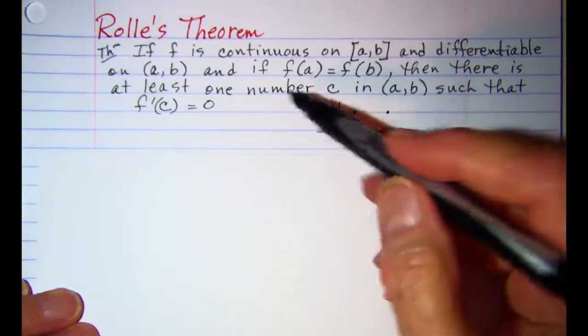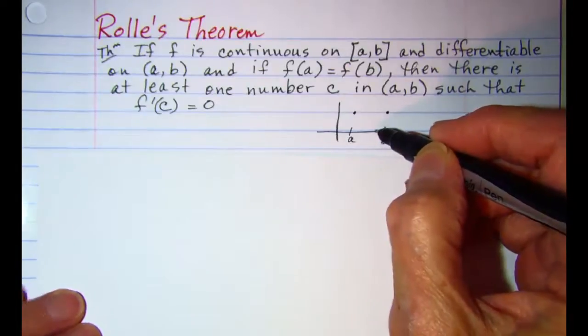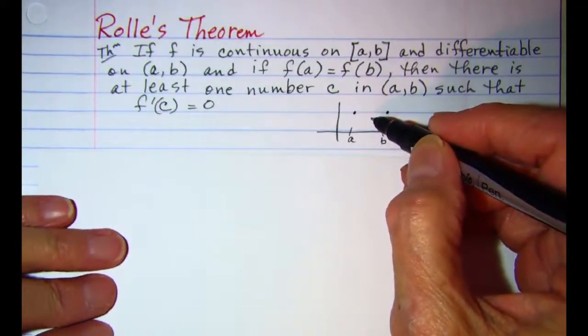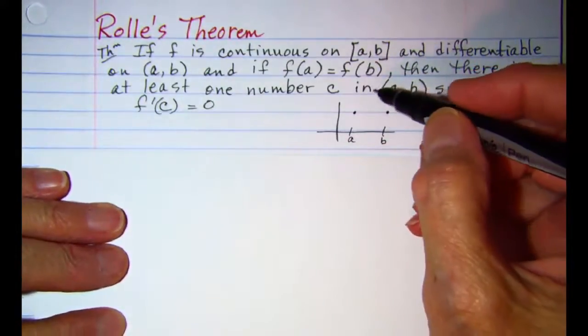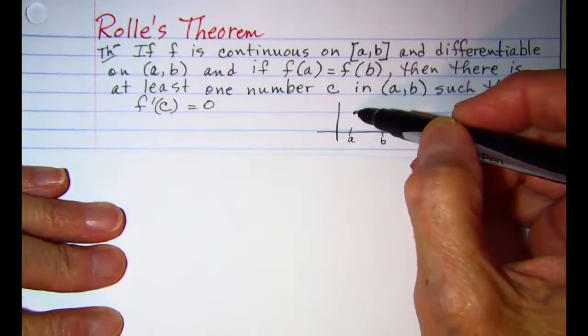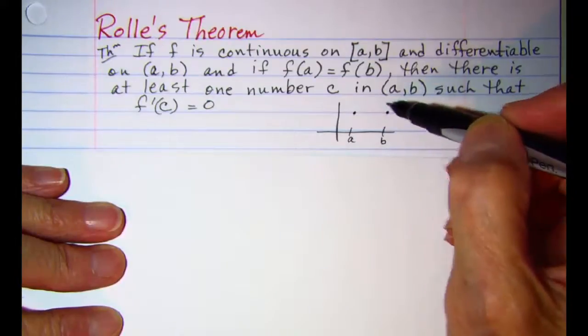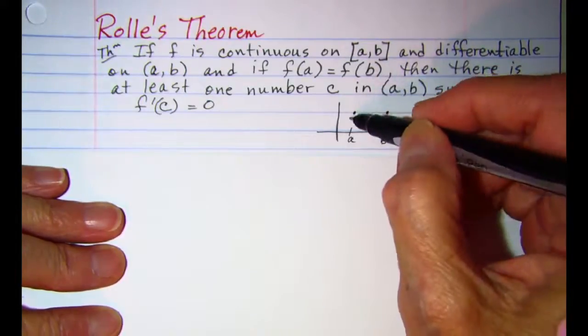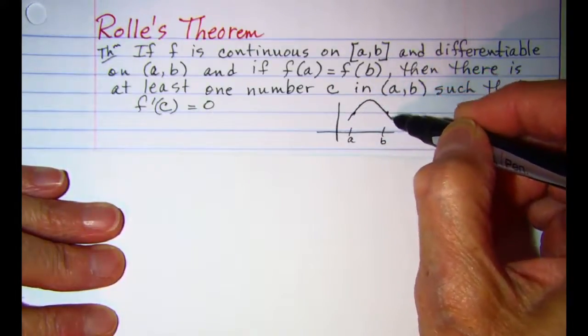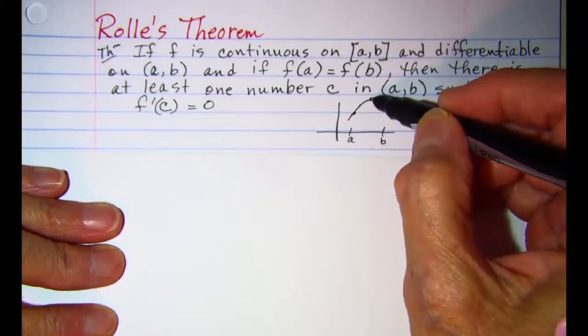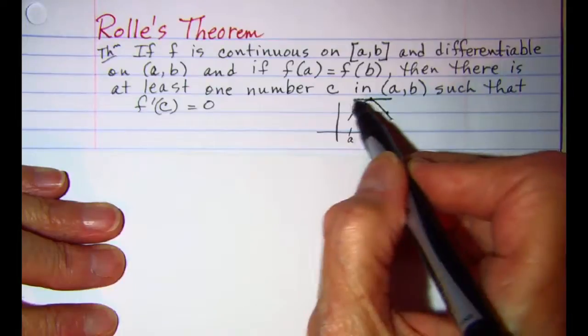Then there's at least one number c that's in this interval so that the derivative of the function evaluated at c is going to be equal to 0. So if we have a function that goes through both of these points and these two points are the same y value, basically what they're saying is there's going to be at least one point where the slope of the tangent line to the curve is equal to 0.